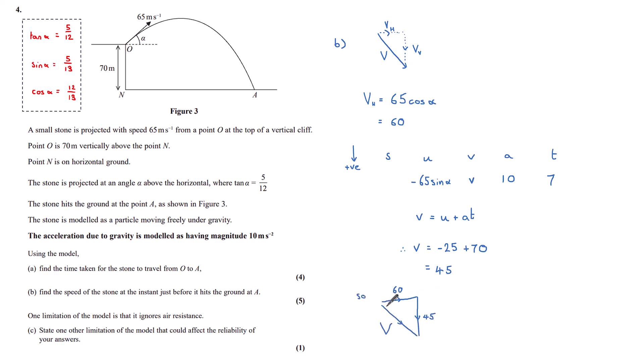Which means if we go back to our original diagram, I have 60 working horizontally, 45 working vertically. So the speed with which it hits the ground is the magnitude of those, which is the square root of 60 squared plus 45 squared, which evaluates to 75. And this is meters per second.